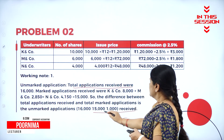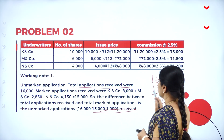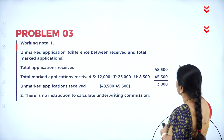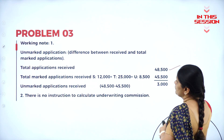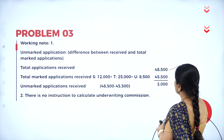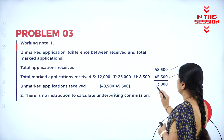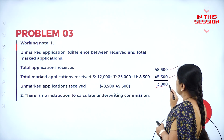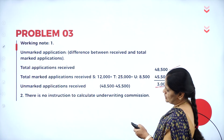So these are the unmarked applications received. What is the total applications received? 48,500. Then marked application is 45,500. So 3,000 is the unmarked application.